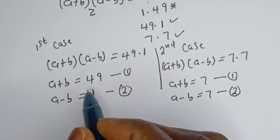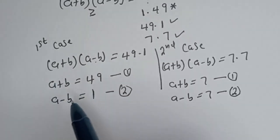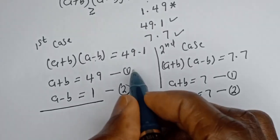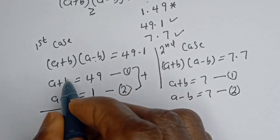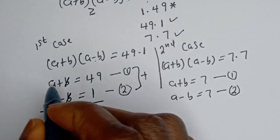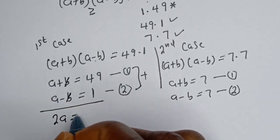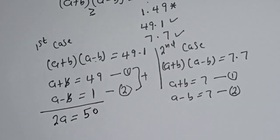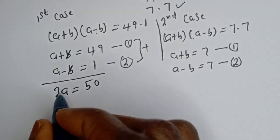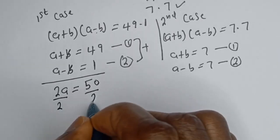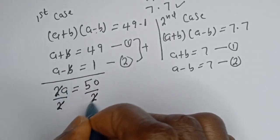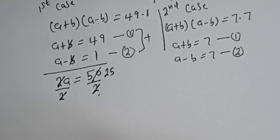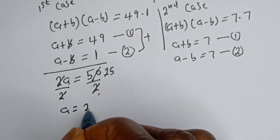We solve equations 1 and 2 from the first case simultaneously using the elimination method. Adding the two equations together, B cancels out. A plus A gives 2A equal to 49 plus 1, which is 50. Dividing both sides by 2, A equals 25.